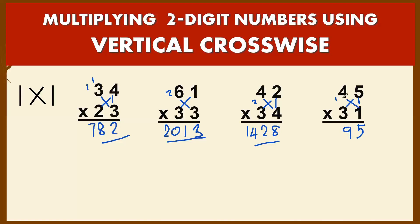Last column: you have 4 times 3, that is 12, plus 1 you get 13. So your final answer is 1395.